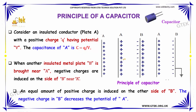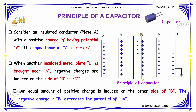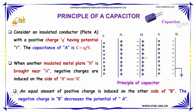When another insulated metal plate B is brought near plate A, negative charges are induced on the side of B near A. An equal amount of positive charge is induced on the other side of B. The negative charge in B decreases the potential of A.